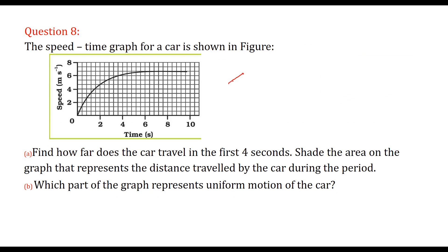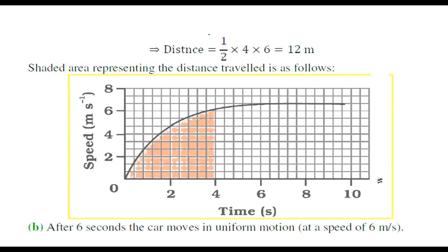The speed-time graph of a car is shown. How far does the car travel in the first 4 seconds? At 4 seconds, the speed is 6 meters per second. The distance is the area of the triangle: half into base into altitude equals half into 4 into 6 equals 12 meters. The shaded region represents this distance. After 6 seconds, the car moves at uniform speed of 6 meters per second.